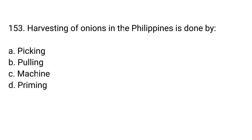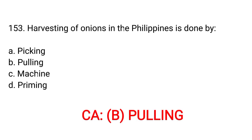Number 153. Harvesting of onions in the Philippines is done by: A. Picking. B. Pulling. C. Machine. D. Priming. Correct answer is letter B. Pulling.